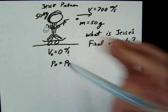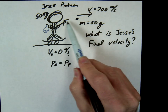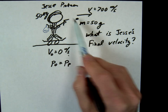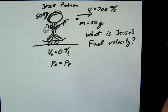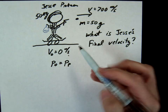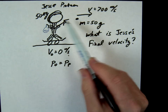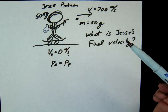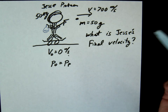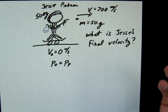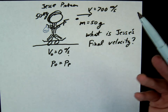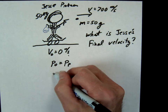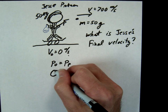All forces are internal to the system. The explosion happening within the gun — that's all inside the system. P initial equals P final. Now what's his initial momentum? Zero. Why is it zero? Nothing's moving. The gun is still, the bullet's still, Jesse's still — everyone is still. So the initial momentum is zero.